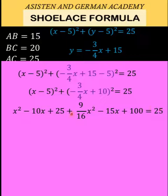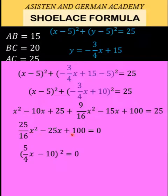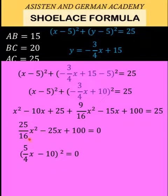Since 25 equals 25, we subtract 25 from both sides. Combining x² + (9/16)x² gives (25/16)x², and −10x − 15x gives −25x, with a constant of 100. The right side is 0. This is a perfect square trinomial, factorable as (5/4 · x − 10)² = 0, which can be verified by expanding back to the original trinomial.